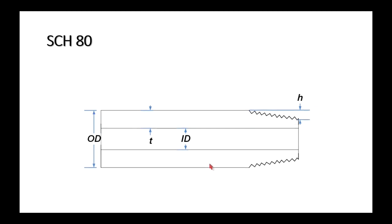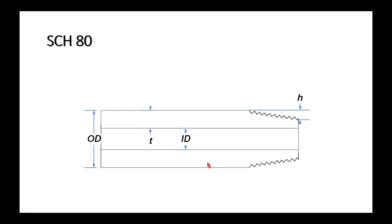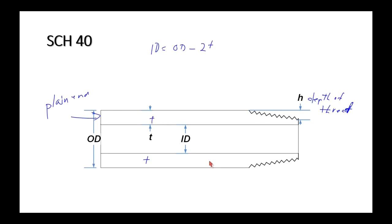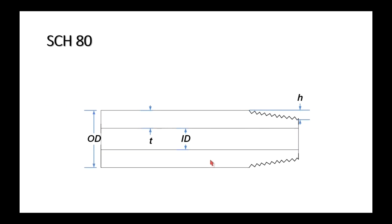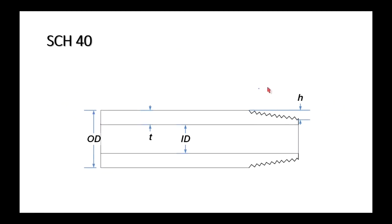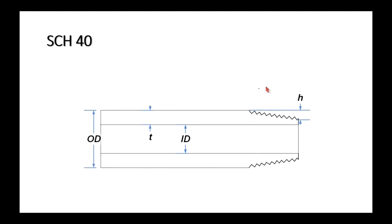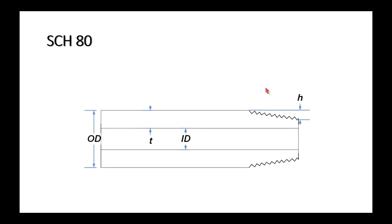Comparing Schedule 40 and Schedule 80: notice the OD never changes when the schedule changes. The outside diameter is constant regardless of schedule — only the wall thickness changes.